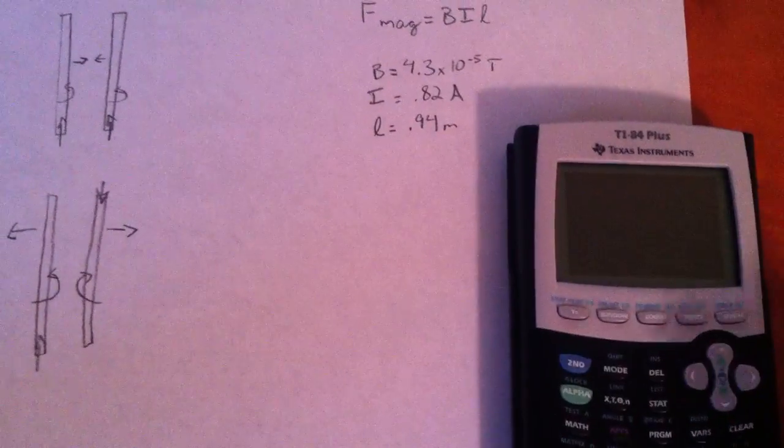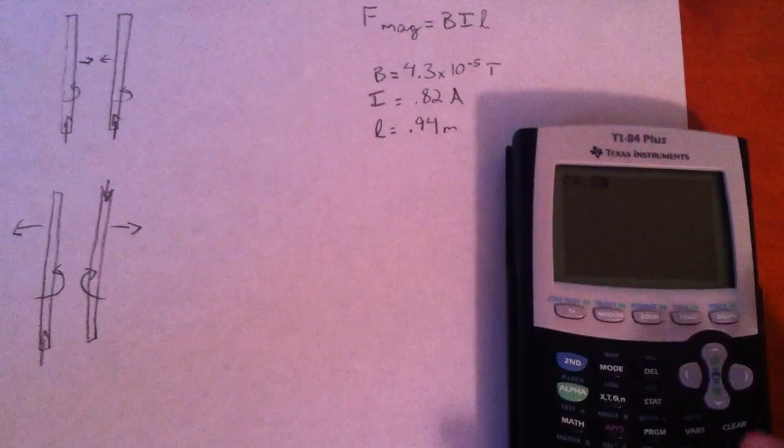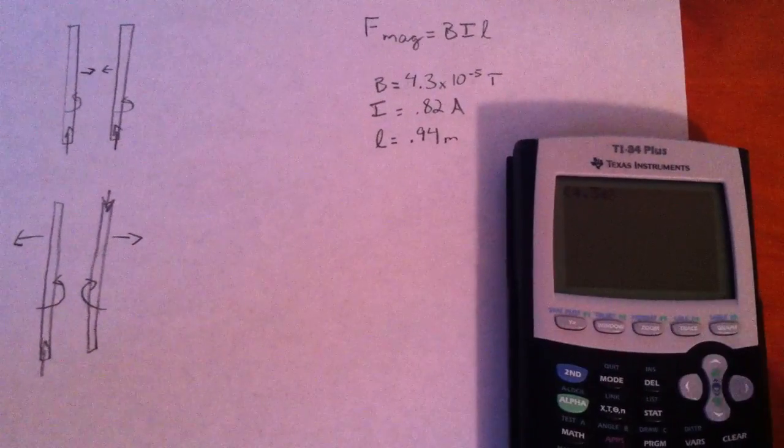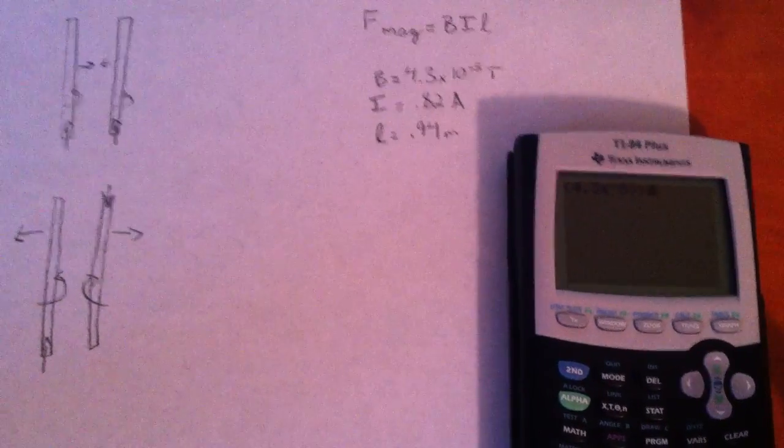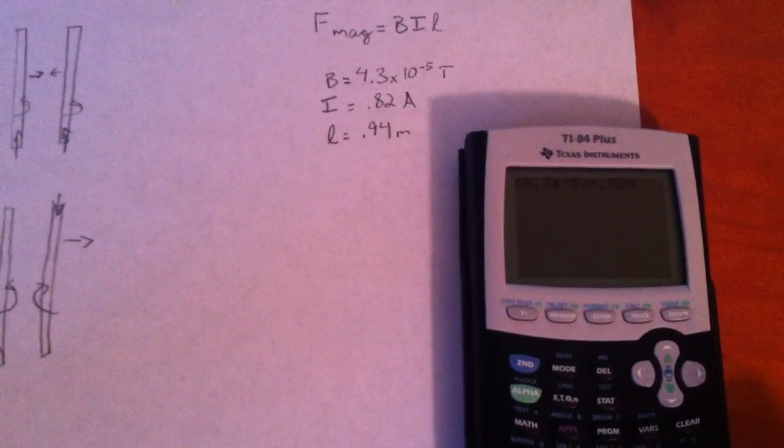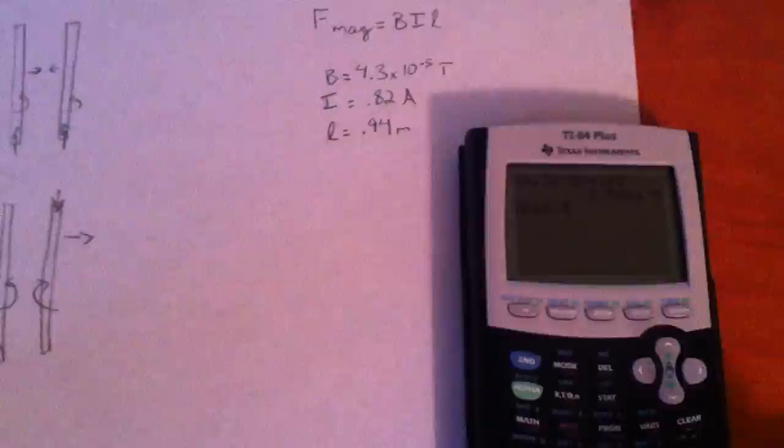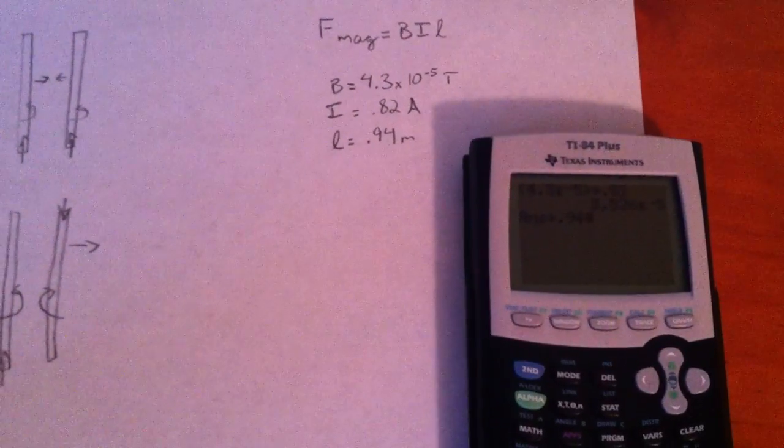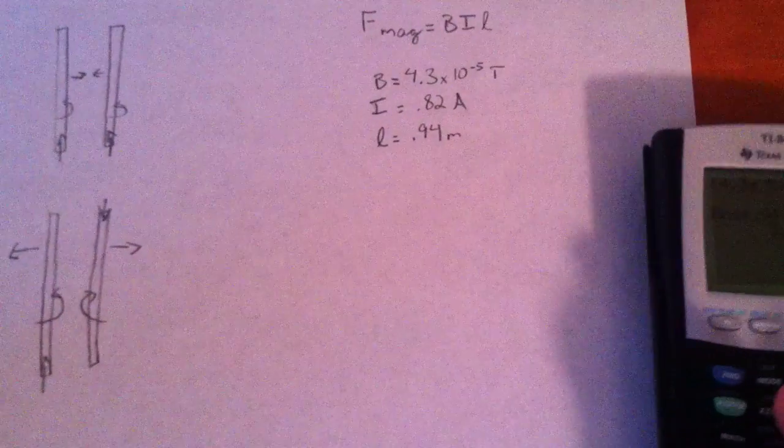All we do is 4.3 E negative 5 times 0.82 times 0.94. Get our answer out to be,